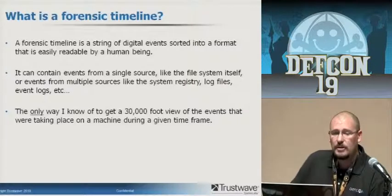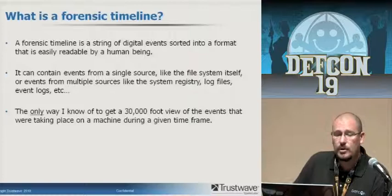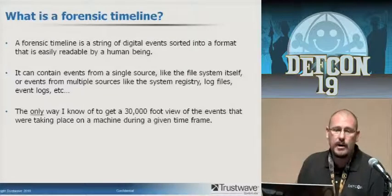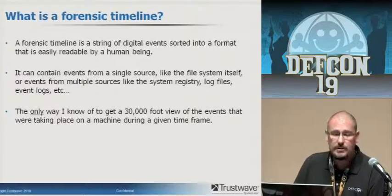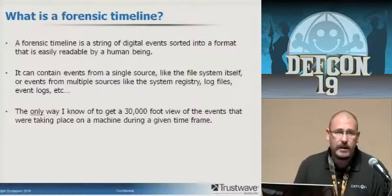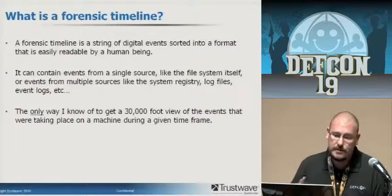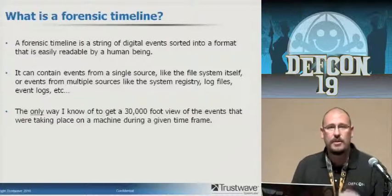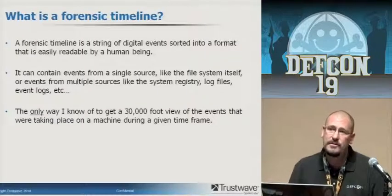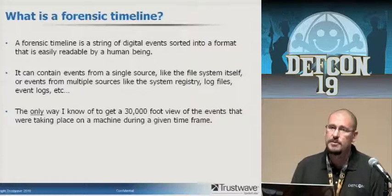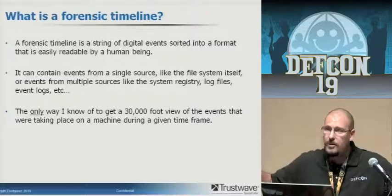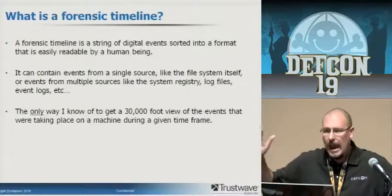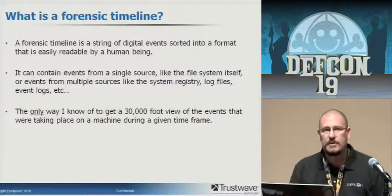What is a forensic timeline? A forensic timeline is a string of digital events sorted into a format that can be easily read and interpreted by a human being. Extremely useful in breach investigations. It can contain events from a single source like the file system, or log files, registry hives, event logs — just about anything that records some kind of timestamp can be dumped into a super timeline. It's really the only way I know of to get that 30,000-foot view of what happened on a particular host around a specific time.